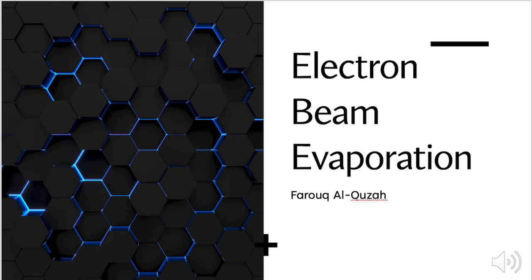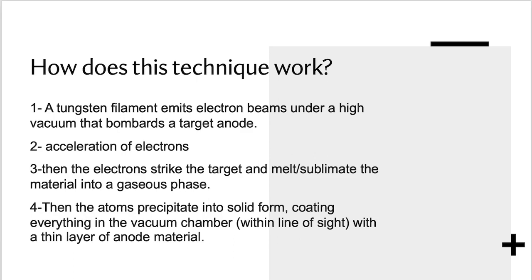Electron Beam Evaporation. How does electron beam evaporation work? A tungsten filament sends off electron beams under a high vacuum that bombards the target anode, which causes the electrons to accelerate.